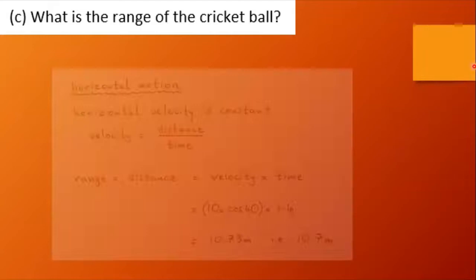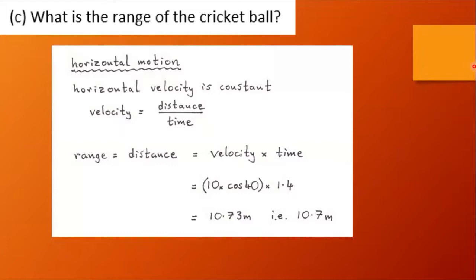What's the range of the cricket ball? Horizontal velocity is constant. Range, which is the distance, is velocity times time. So we get the horizontal component of the velocity times the total time, and that gives us 10.73 meters. So let's round that to 10.7 meters, not too many significant figures.